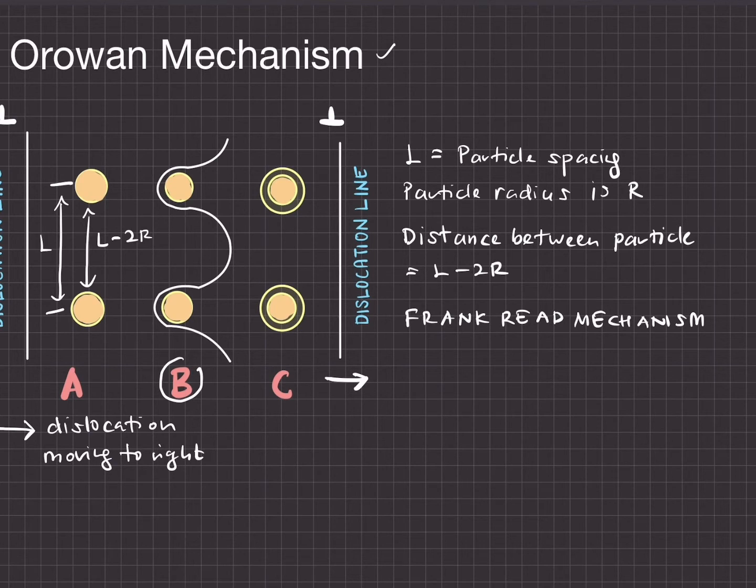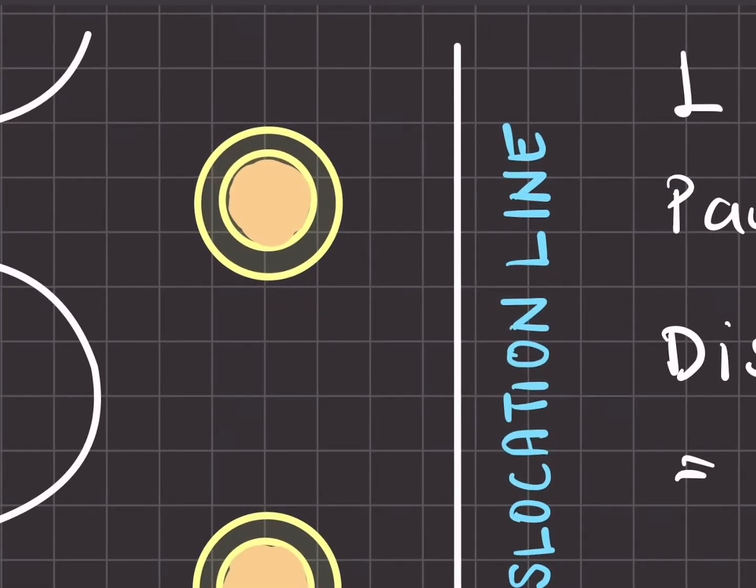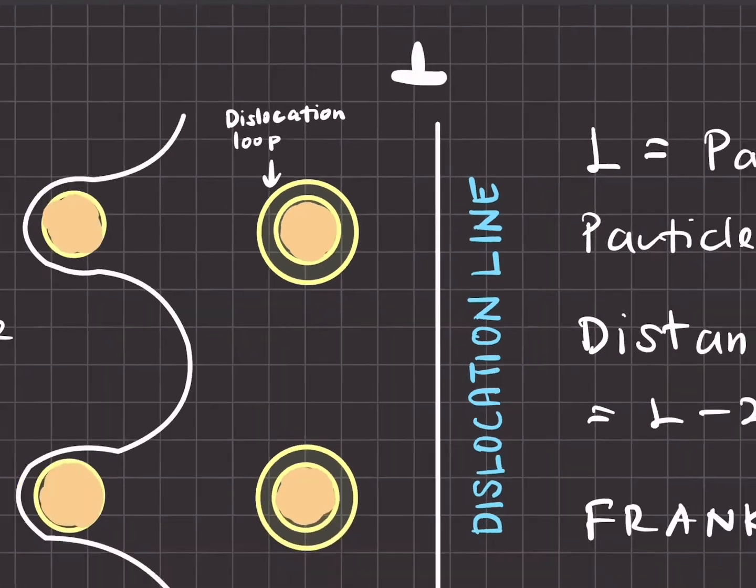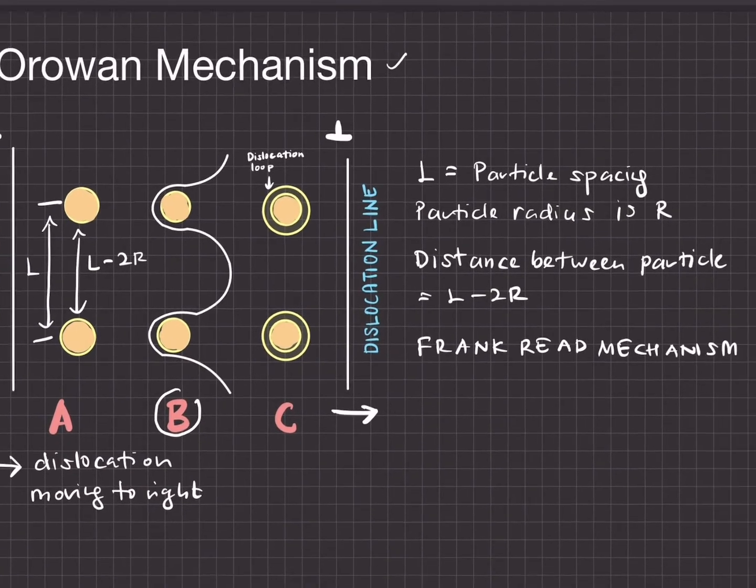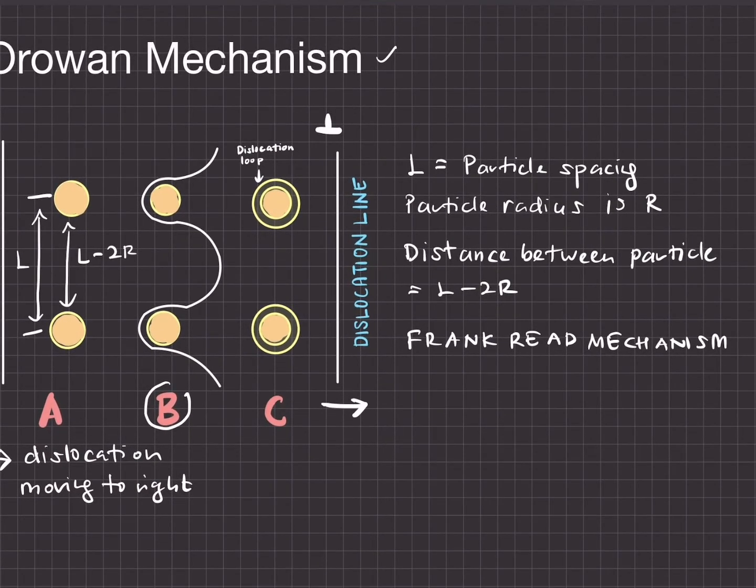It will keep moving, and what happens is the dislocation will pass the particle, and the dislocation line is being held up by the particle. Finally, we end up with a dislocation loop around the particle, and the dislocation will continue to move to the right.